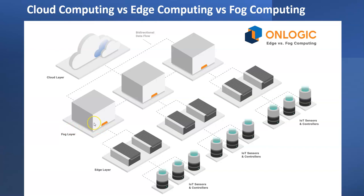From the edge layer, the fog layer picks up the data and again does processing and filtration. It decides what data really needs to be sent to the cloud, what data should be discarded, and what data should be stored locally. All of this decision-making happens at the fog layer.